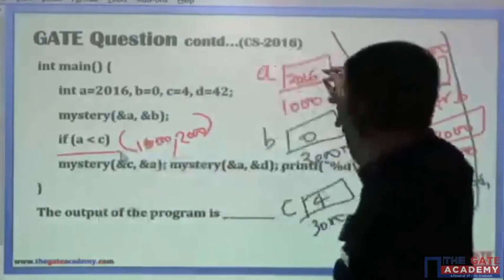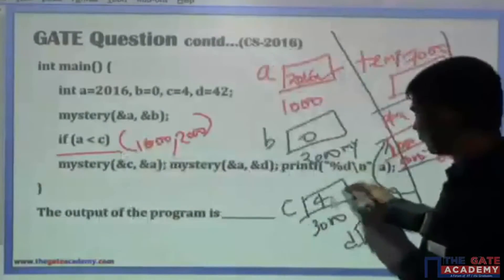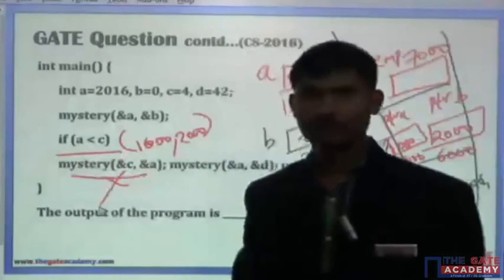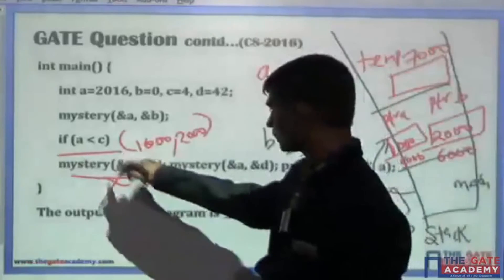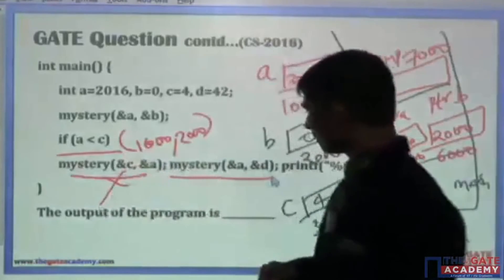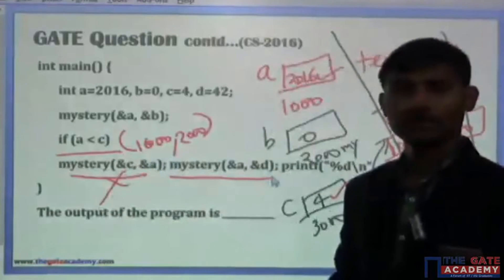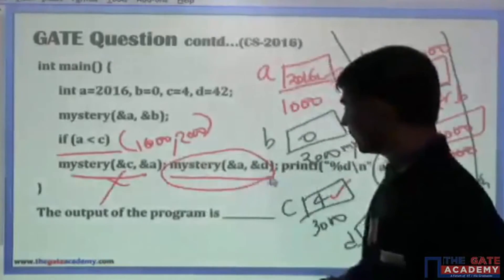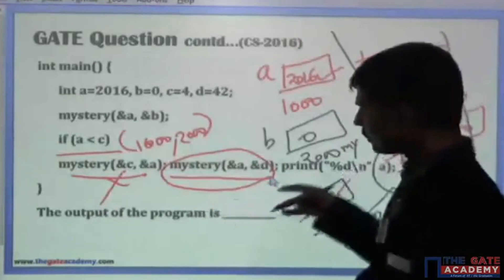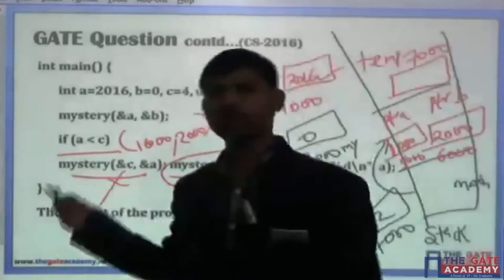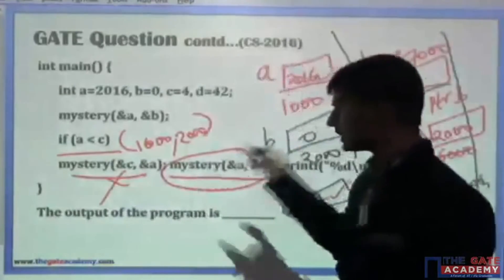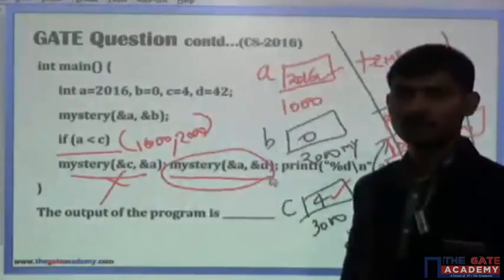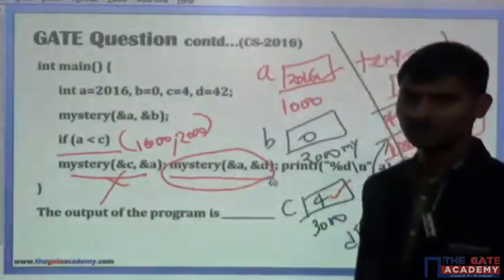If a is less than c: the value of a is 2016, and 2016 is not less than 4, so this condition is false. Since it is false, the first mystery call inside the if-block does not execute. The control moves to the next statement — mystery with ampersand a and ampersand d. This function call is made in the same manner, and the same effect occurs: no changes are made to memory. You can essentially ignore it — it will be called, but no changes are done.